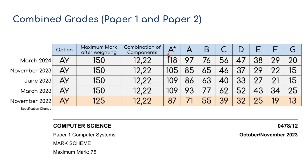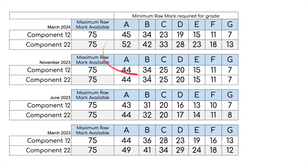So for A-stars, realistically between 110 and 120 combined from both papers one and two, I think would be a good position to be getting that A-star. I've separated these out: March 2024, November 2023, June 2023 and March 2023, and you can see what the raw marks were for the A grade. Adding both together, remember: 97, 88, 87 and 93.